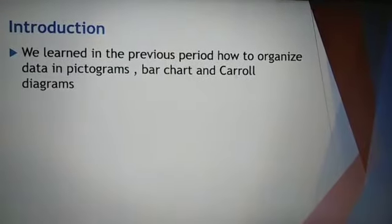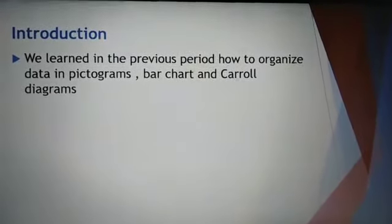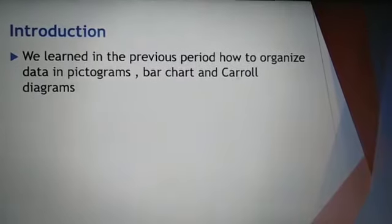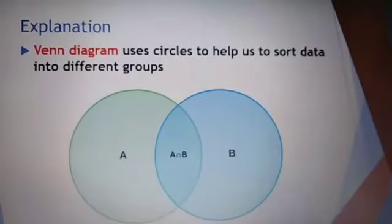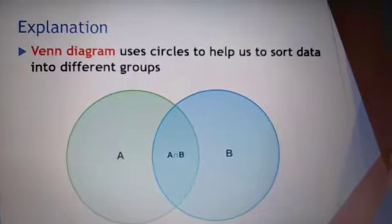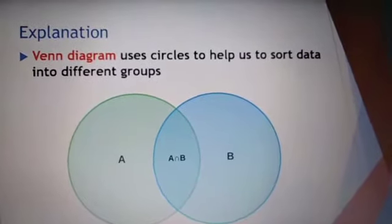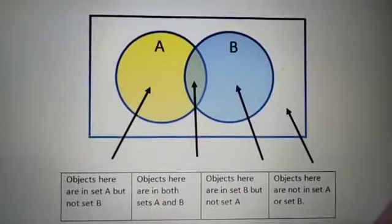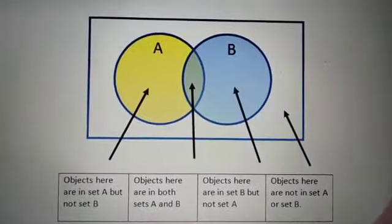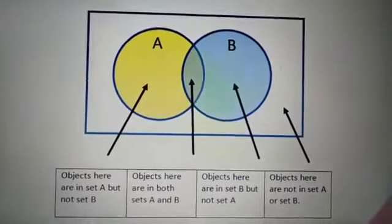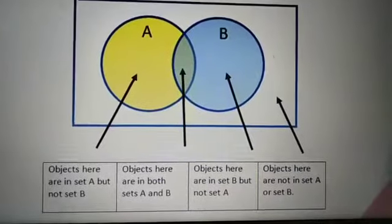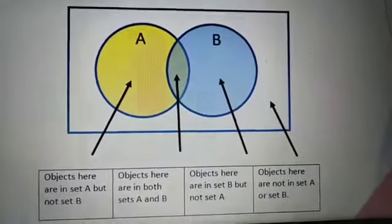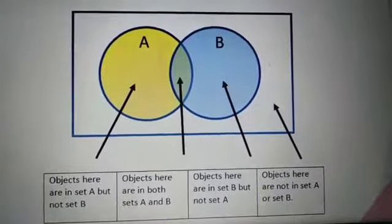In the previous periods, we learned about three different types of charts: the pictograms, the bar charts, and the circle diagrams. We also learned about the Venn diagram, and we said that the Venn diagram uses circles to help us sort data into different groups. We said that the Venn diagram is divided into four different parts: circle A, circle B, the overlapping between circle A and B, and the space that is out of both circles.